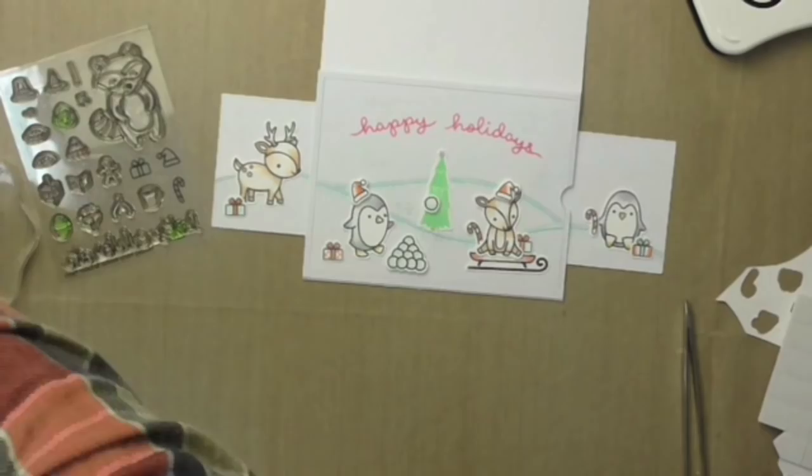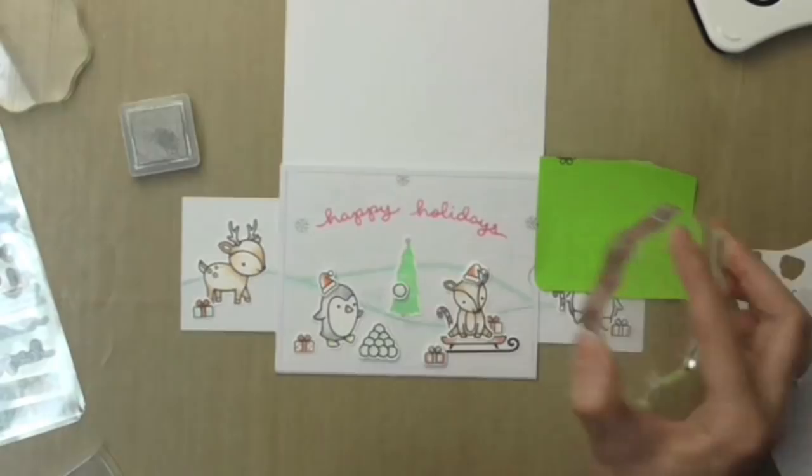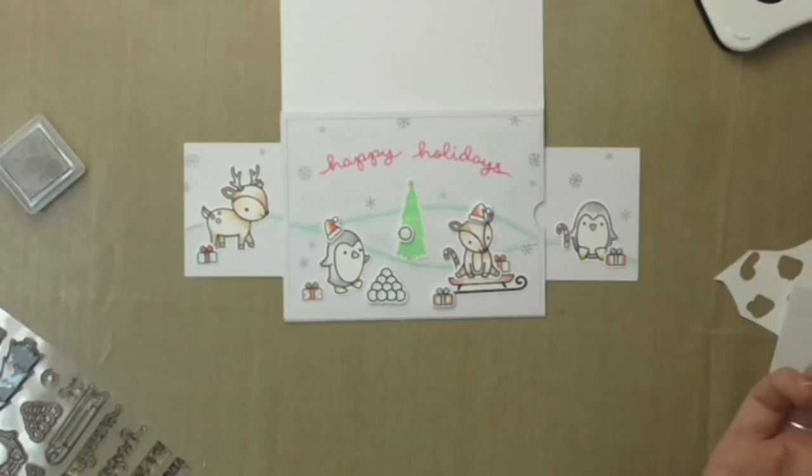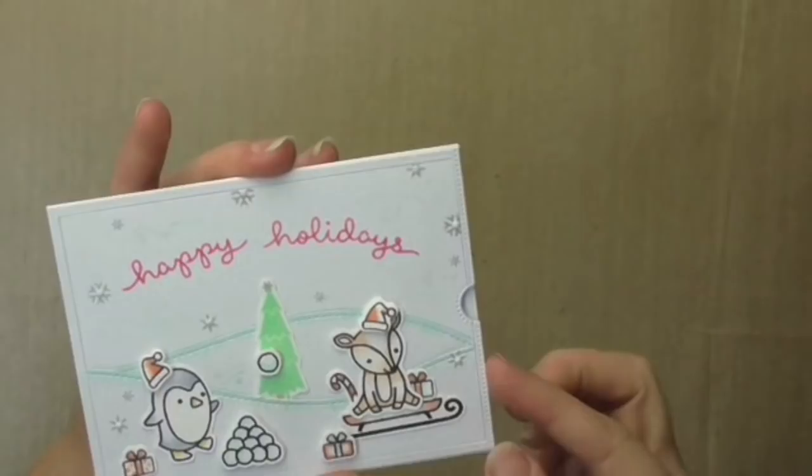Now there are also some little snowflake stamps in this same stamp set so I thought it would be cute to add some silver snow falling and I masked off the frame so I didn't get any on the frame and that's pretty much the card done. A few little bits to add for example some Wink of Stella and I used some enamel accents on the front panel of the card in the middle of the snowflake so it has a little dimension.